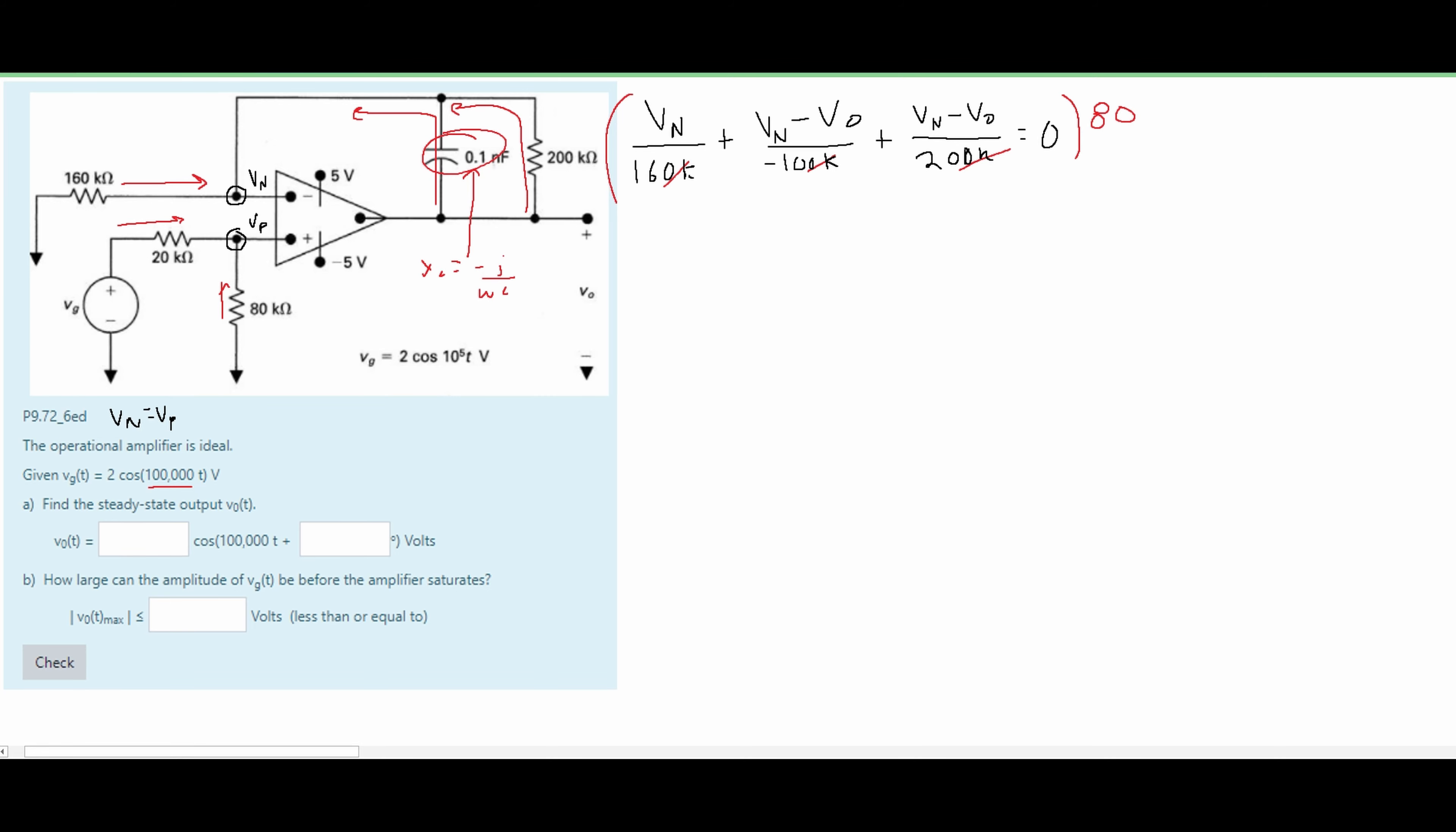Also I made a mistake with this capacitor right here. I forgot to include the J right here. So we should have a negative J times R10. And after doing this we are going to get this as our new equation.